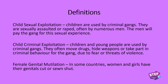You've also got child criminal exploitation, or CCE. Children and young people are used by criminal gangs. They often move drugs, hide weapons or take part in criminal behaviour for the gang due to the fear of threats or violence. And female genital mutilation, or FGM — this happens in some countries.